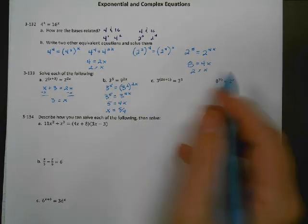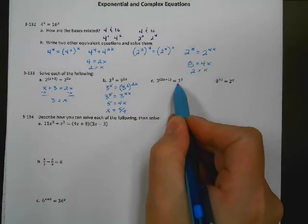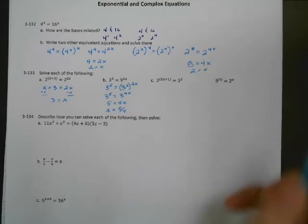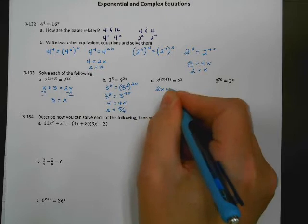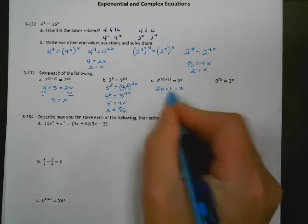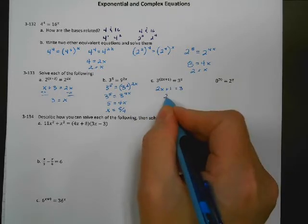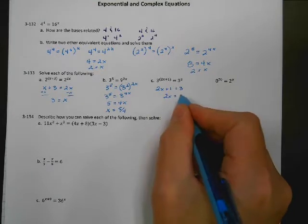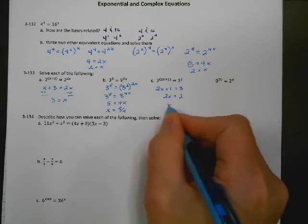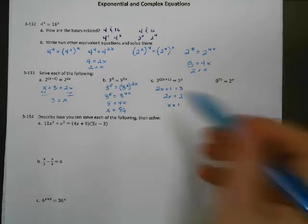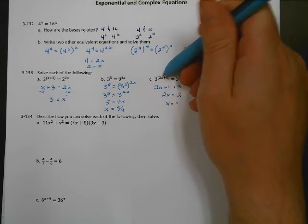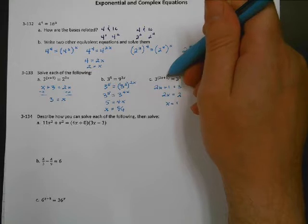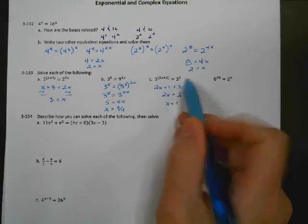Next one: bases are the same, so the exponents have to be equal. I write that 2x plus 1 equals 3. Subtract 1 from both sides and get 2x equals 2. Divide by 2 and x equals 1. We can plug it back in: 2 times 1 is 2, plus 1 is 3, so 3 to the 3rd equals 3 to the 3rd — both are 27.